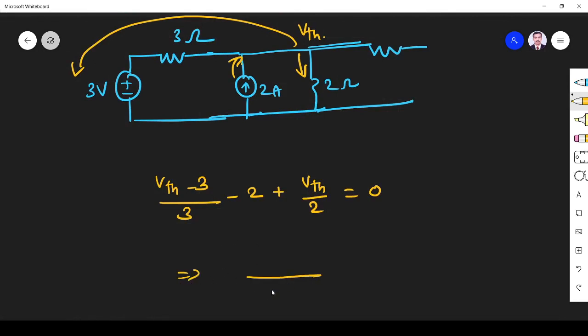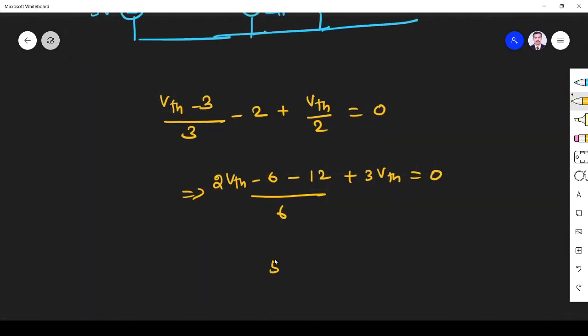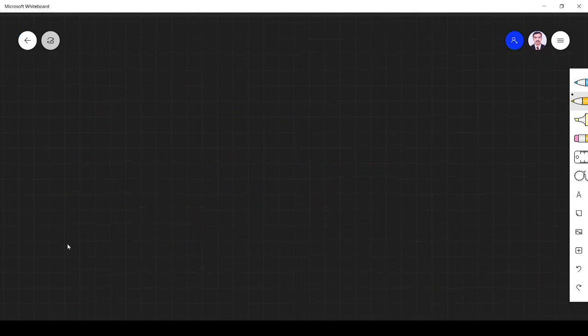This is 2 Vth minus 6 plus 12 plus 3 Vth is equal to 0. So 5 Vth is equal to 18. So Vth is equal to 3.6 V.